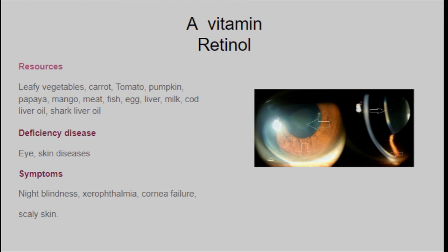Next, fat-soluble vitamins — A, D, E, K. Vitamin A is retinol. Resources are leafy vegetables, carrot, tomato, pumpkin, papaya, mango, meat, fish, egg, liver, milk, cod liver oil, and shark liver oil. The deficiency of vitamin A leads to eye problems, skin disease, and night blindness. Symptoms include xerophthalmia, cornea failure, and permanent blindness, as well as scaly skin. Children, be cautious about vitamin A — otherwise you may need spectacles. Try to take these resources, which are very cheaply available.